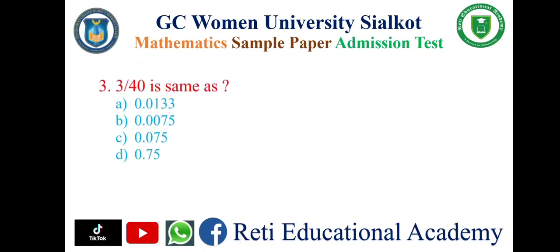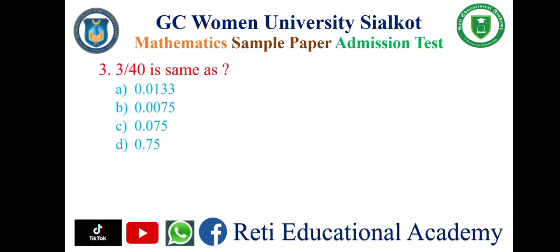Question number three: 3 upon 40 is same as — A: 0.133, B: 0.0075, C: 0.075, D: 0.75. And the correct answer is C: 0.075.